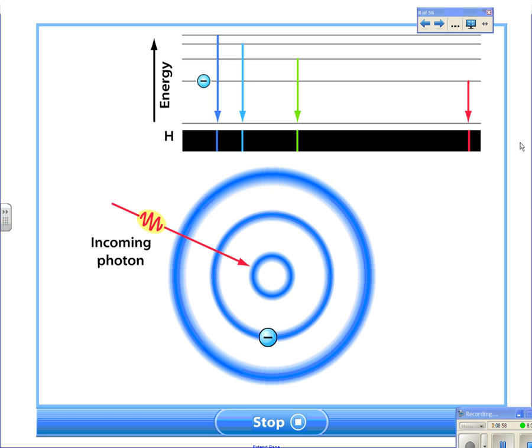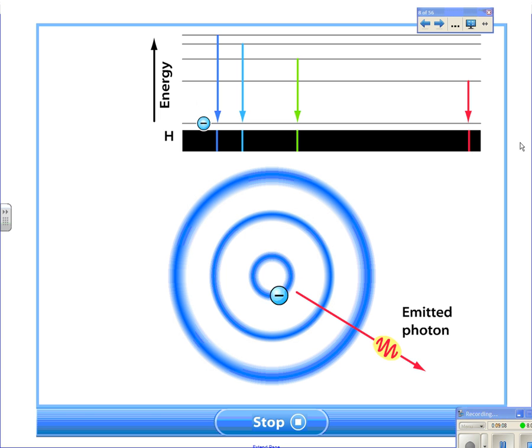When a hydrogen atom is in an excited state, its electron is in a higher energy orbit. When the atom falls back from the excited state, the electron drops down to a lower energy orbit and a photon is emitted. The emitted photon has an energy equal to the energy difference between the higher energy orbit and the lower energy orbit.